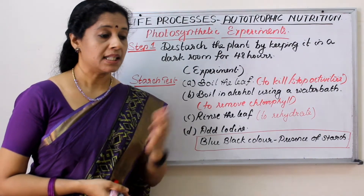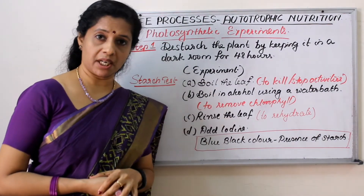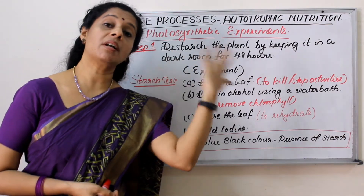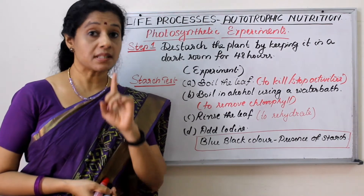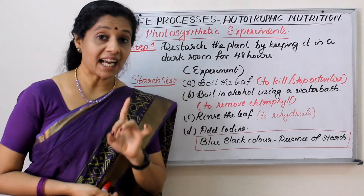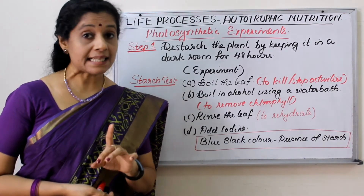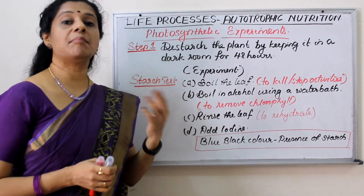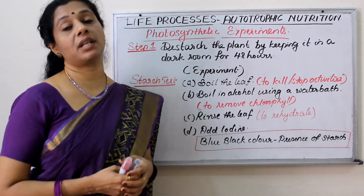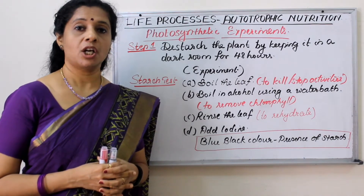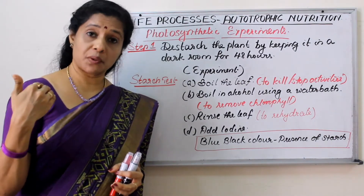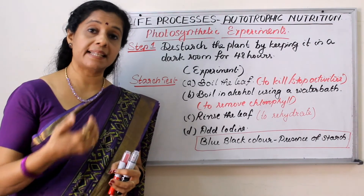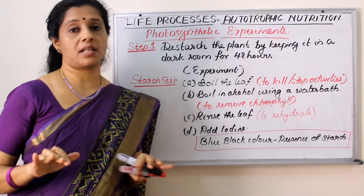There is one more problem here. If I simply take a plant and test for starch, we know starch is the stored form of food — it may already be stored. So first and foremost, we have to de-starch the plant. De-starch means remove the starch. To remove starch, take the plant and keep it in a dark room for almost 48 hours, so the plant will not do photosynthesis and whatever starch is present will be used up. When taken out after 2 to 3 days, the plant is devoid of starch and we can start the experiment.